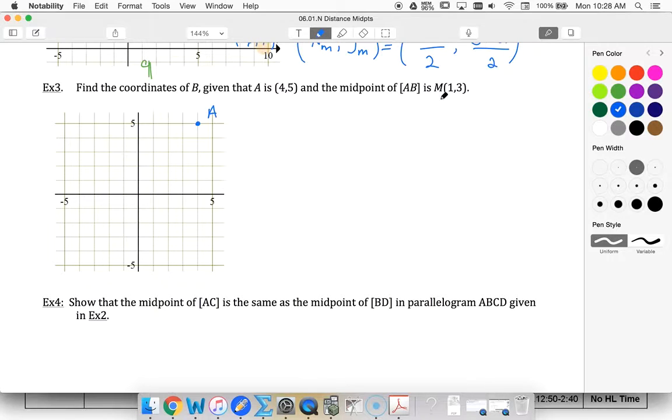The midpoint of AB is (1, 3), over 1, up 3. So there's my midpoint. If this is the middle, B must be down here somewhere. So I can use my logic to help me figure this out.